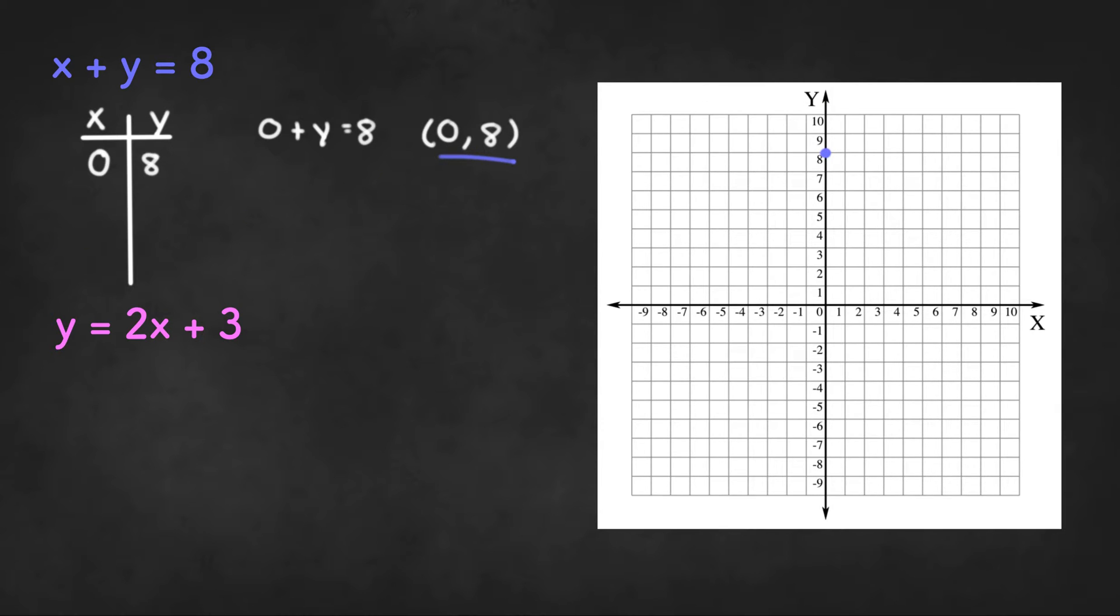Now we can try another solution. If x equals 1 we get 1 plus y equals 8 and y needs to be 7 for this equation to be true. So our next point will be 1 comma 7. We can plot that right here.